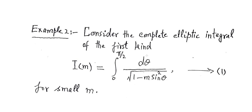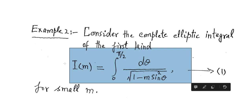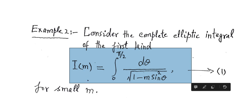This integral is known as the complete elliptic integral of the first kind, given by equation number one. The integral is denoted by I(m) — capital I for integral — and since the integral depends upon the parameter m, which is a small parameter, we call it I(m).